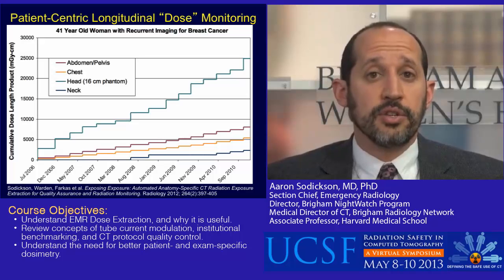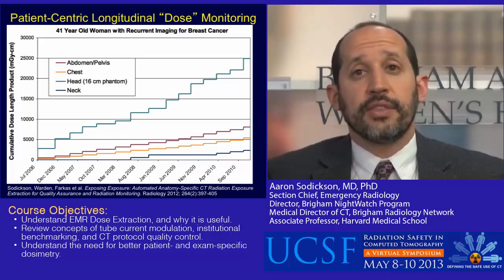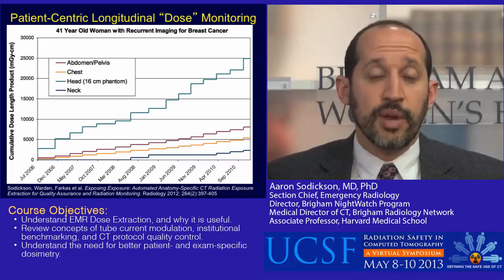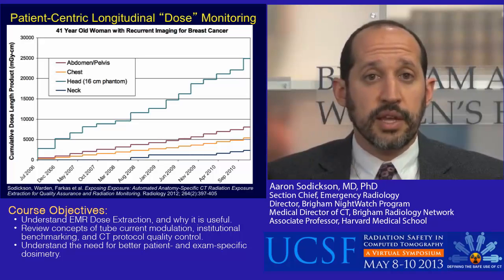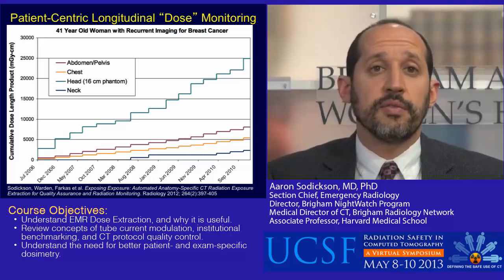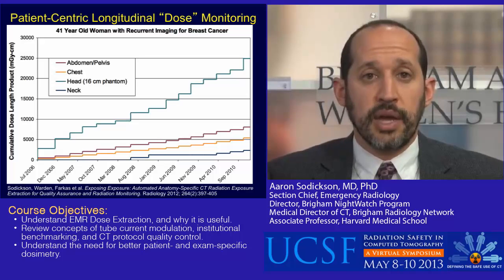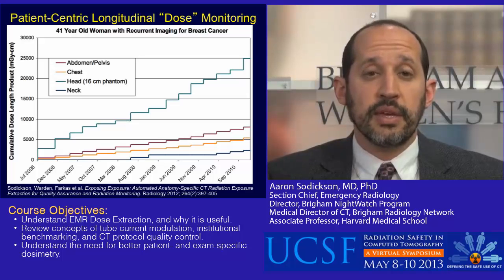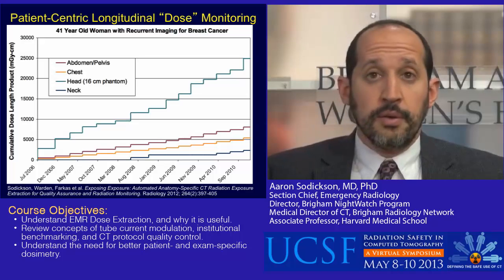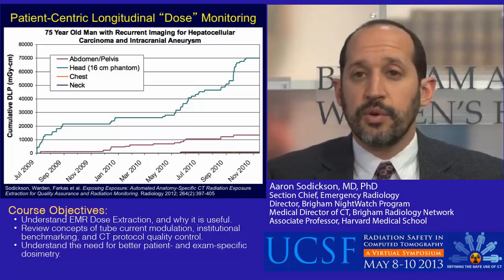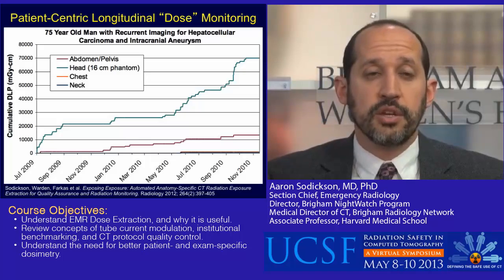Once we've extracted all of this data, we can look at longitudinal records for a specific patient. This happens to be a patient with breast cancer who gets recurrent imaging almost every six months like clockwork for restaging and to surveil for recurrence. What you see here is the accumulation of dose length product by different body parts — though I put 'dose' in quotes because I'm showing accumulated DLP, not patient dose. Here's another example — a different patient with a history of HCC and intracranial aneurysm who has a very different pattern of DLP accumulation over time.